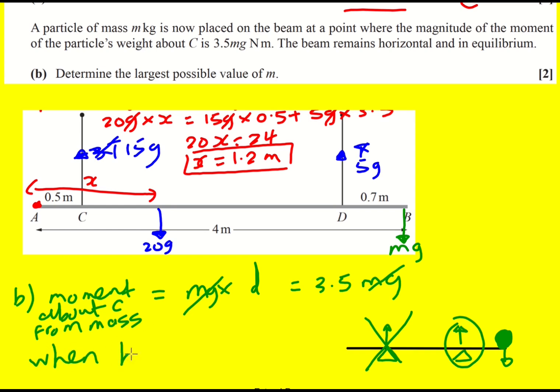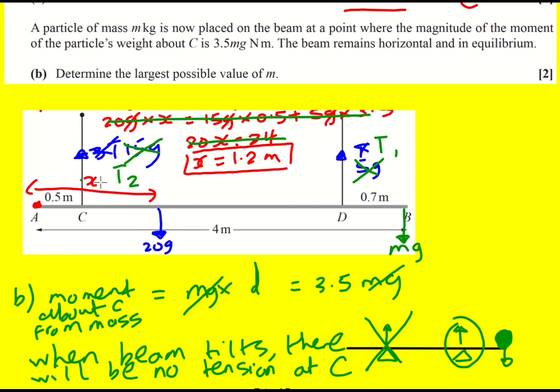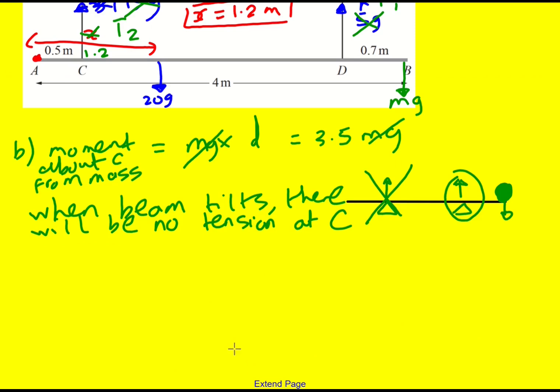When the beam tilts, there will be no tension at C. In fact, I need to modify this diagram slightly because this is going to be T1 and this is now going to be T2. Sorry, that was calculations from before, but that 1.2 meters is still correct. So now what I'm saying is the beam is going to tilt and the string here is going to become slack. That's subtle, but that's what's going to happen.